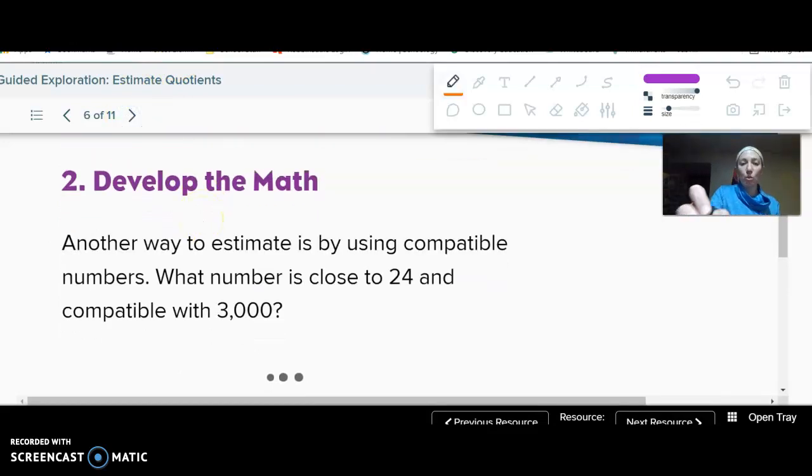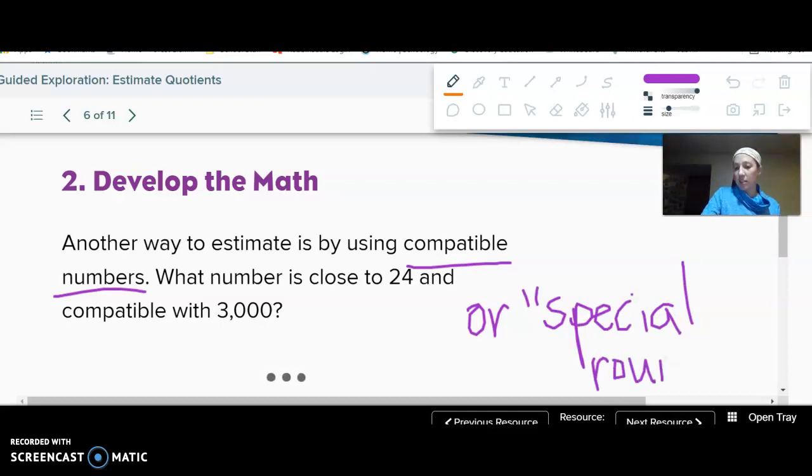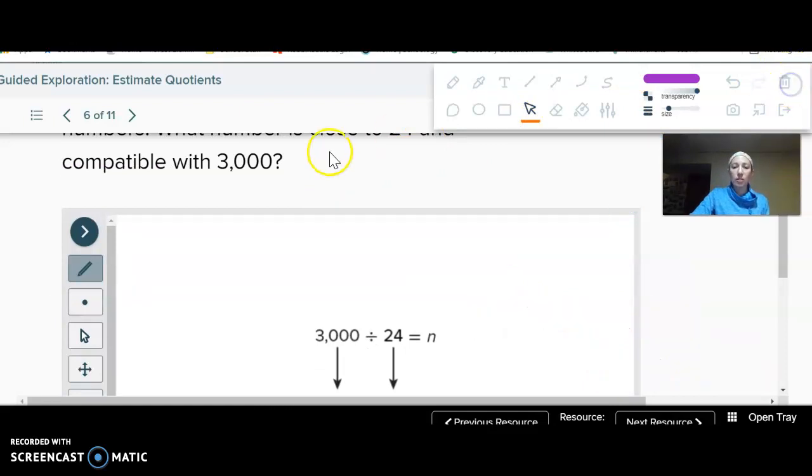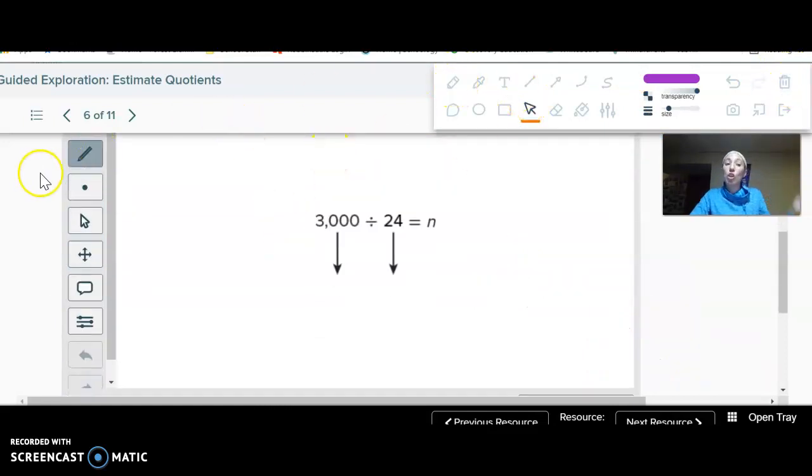So the other way to do it is by using compatible numbers. You can add this, or I made up this term, special rounding, because it's not official rounding. It's finding a number that is close that works with that dividend, that first number. Because sometimes official rounding gets weird, and you'll see why. Okay, so if I think about what is close to 24 that goes with 3,000 or goes with 30? If I just look at the first part.